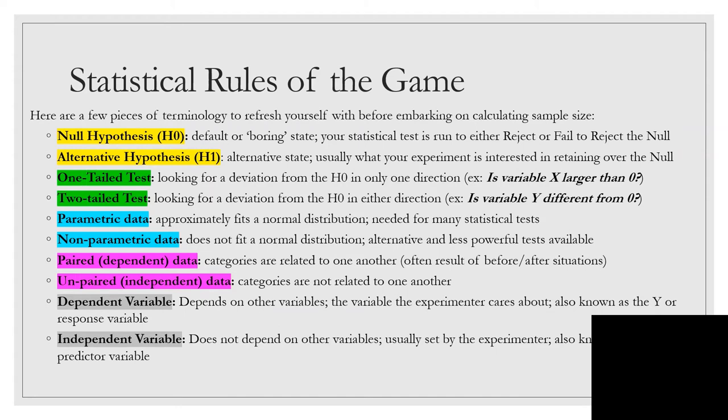Now let's talk about some statistical rules of the game, terms we need to understand and be on board with. First set is null hypothesis and alternative hypothesis, often shown as H0 and H1. The null is the default or boring state and you run your test to either reject this or fail to reject this. The alternative is your alternative hypothesis, alternative state. It's usually much more exciting, like if a drug treatment actually has an effect at lowering cancer rates. You're usually interested in retaining this one over the null.